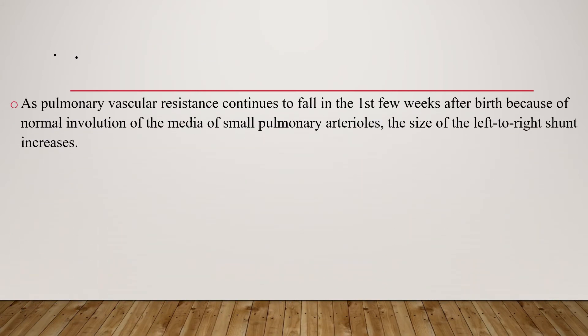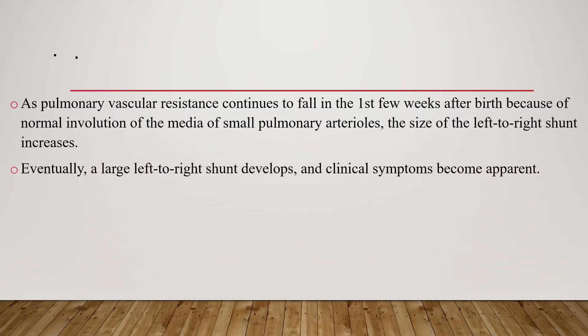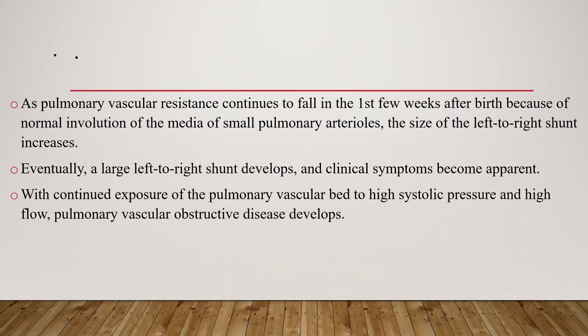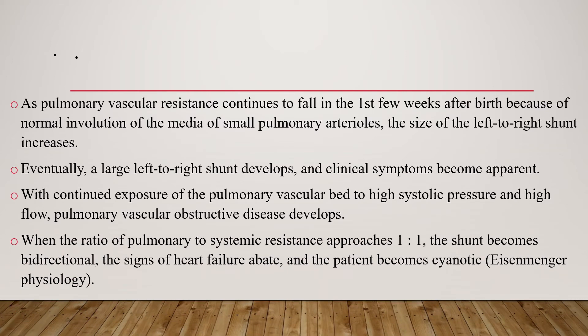As pulmonary vascular resistance continues to fall in the first few weeks after birth due to normal involution of the media of the small pulmonary arteries, the size of the left-to-right shunt increases, eventually developing a large left-to-right shunt making clinical symptoms apparent. With continued exposure of the pulmonary vascular bed to high systolic pressure and high flow, pulmonary vascular obstructive disease develops. When the ratio of pulmonary to systemic resistance approaches 1 to 1, the shunt becomes bidirectional, and later the patient becomes cyanotic as Eisenmenger physiology develops.